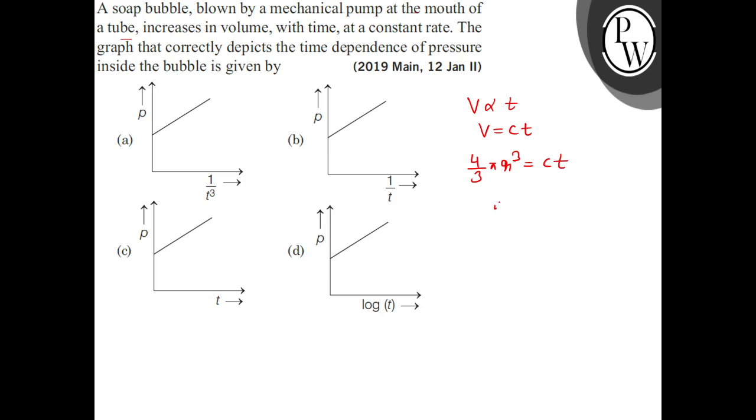R is equal to ct. We have to talk about pressure. If we see R on time, the rest are all constants. So R is equal to k into a new constant, and it is 1 by 3, because R cube is t.